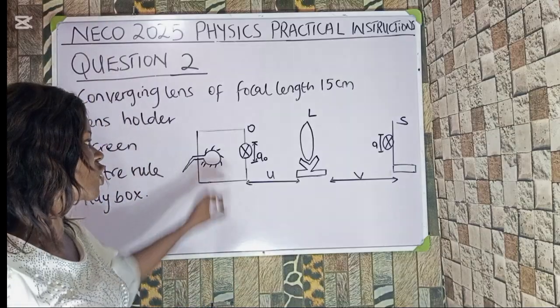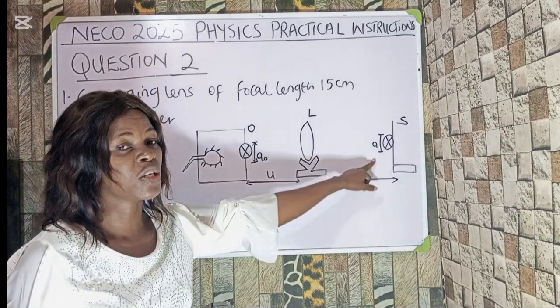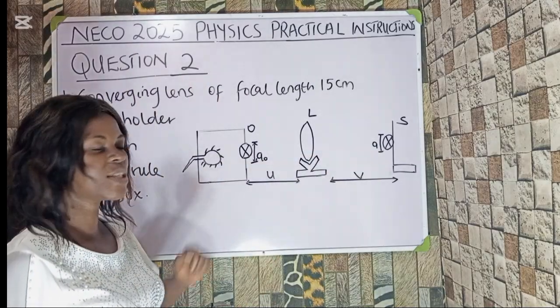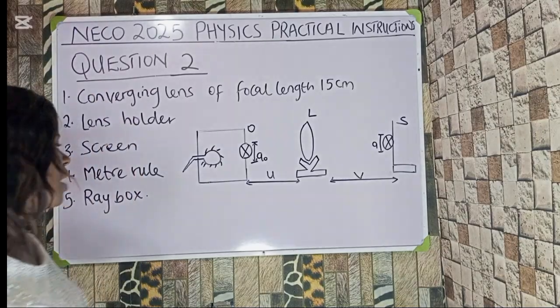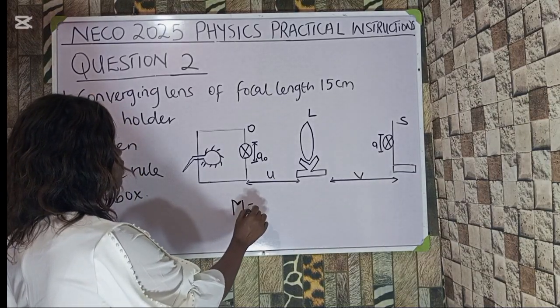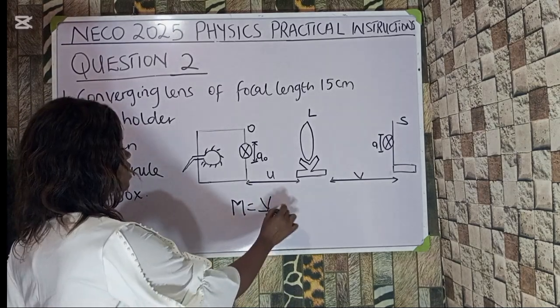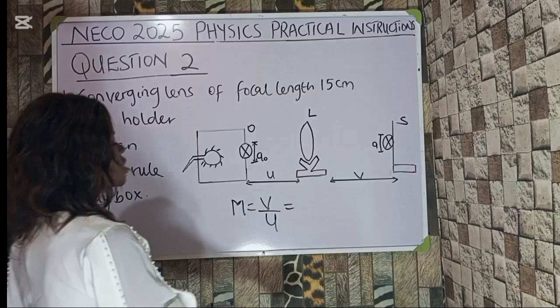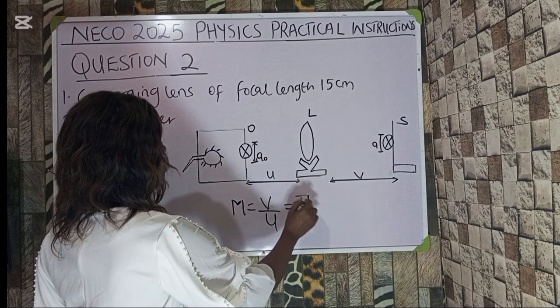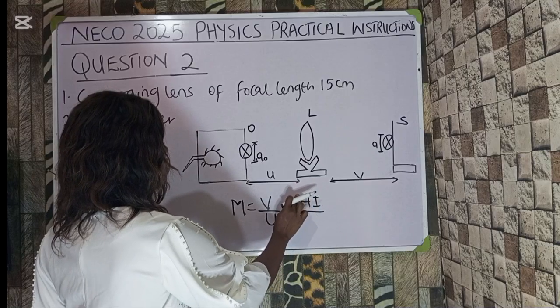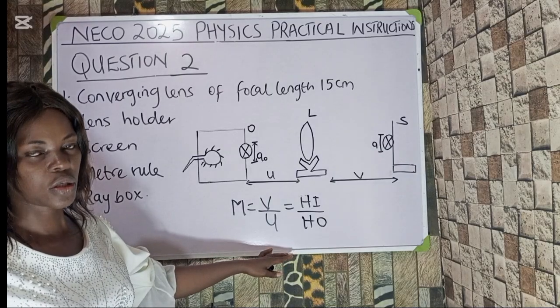And there's also a possibility for us to measure the size of the object, which is A naught, and also the size of the image, which is A. In this context, we'll be asked to calculate the magnification produced. And remember that magnification is equal to the image distance all over object distance, which is also equal to the image height, height of image, divided by height of object. This can happen as magnification.